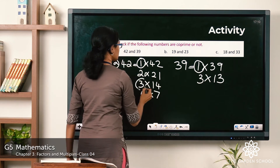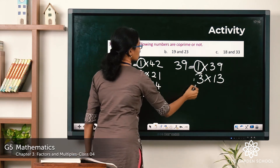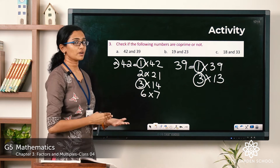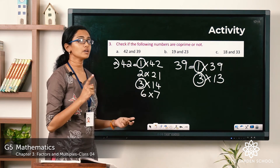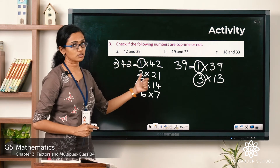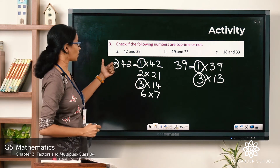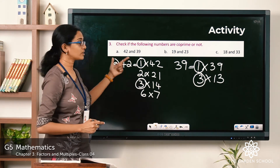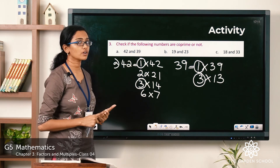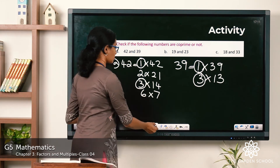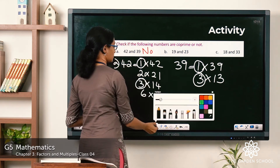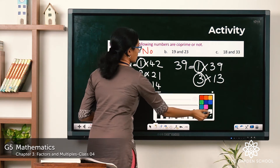Co-prime numbers have only 1 as a common factor. Here, there are two factors common to 42 and 39 — both 1 and 3. So is that co-prime or not? No, it's not co-prime. So we can write: No, it's not.